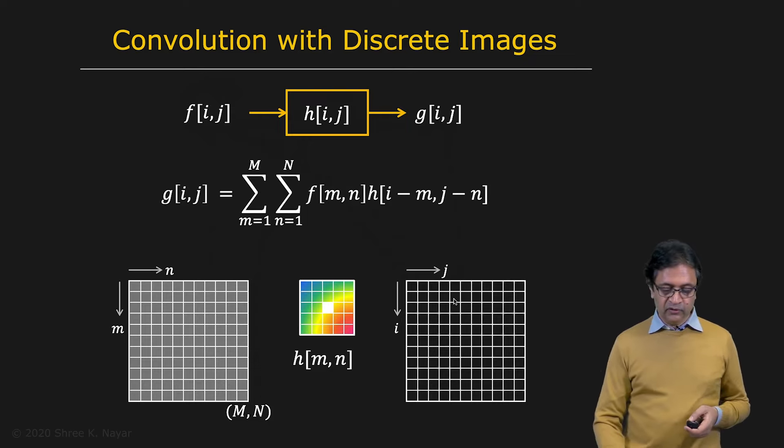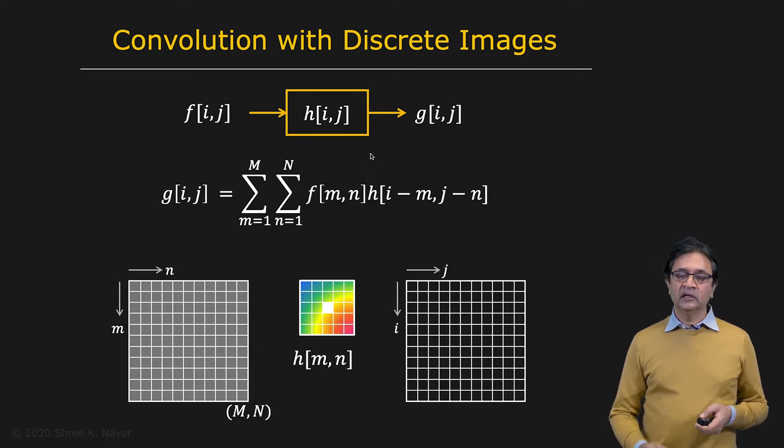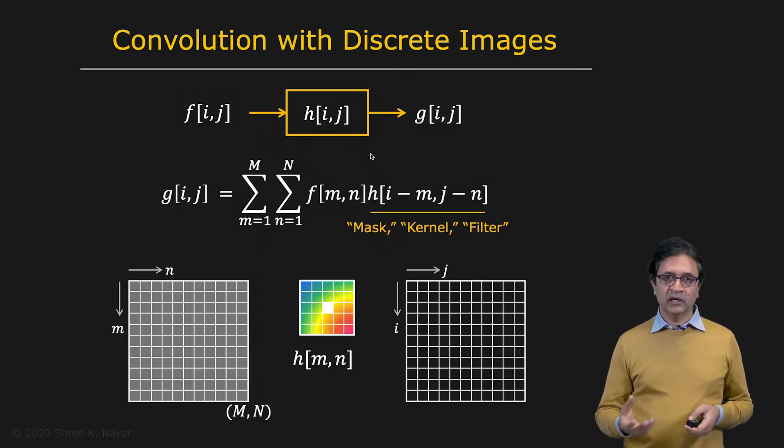So the definition of convolution here in discrete domain is G_ij equal to summation over M summation over N of F_MN H[I minus M, J minus N]. This is where the flip is happening, the flip that happens in the case of a convolution. Remember that in the case of two dimensions, the flip is going to happen twice, one with respect to I and the other with respect to J. Anyway, this impulse response is often referred to as a mask, a convolution mask, or a convolution kernel, or a convolution filter. So we'll use these terms interchangeably as we go forward.